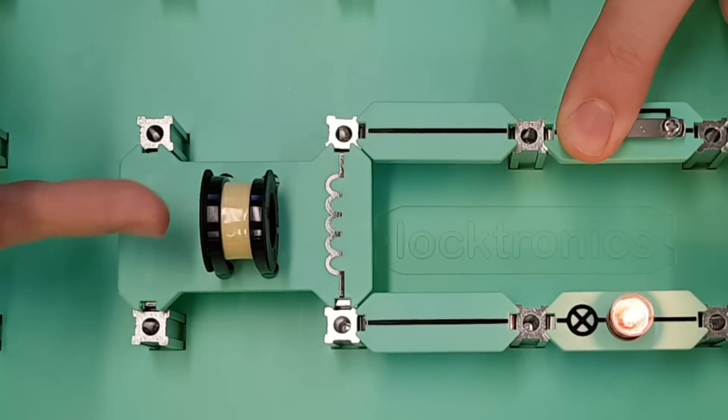When current's flowing around the circuit, it's flowing through this component here. Now this component, you could refer to it as an inductor. It's basically just a coil of wire that's all wrapped around on itself many, many times and current passes through there.